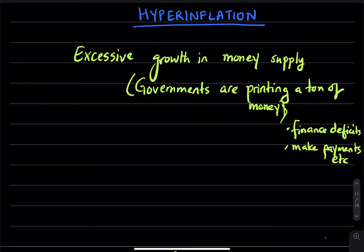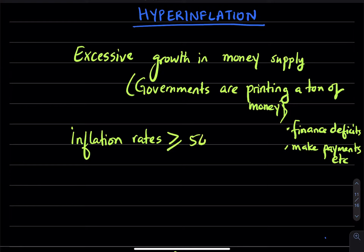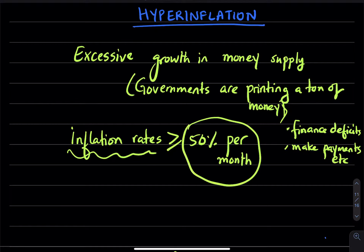So, what qualifies as hyperinflationary? When inflation rates are in excess of 50% per month — imagine that. Imagine your rent going up 50% each month and what a toll it would take on your budget, on your pocket. Inflation rates of more than 50% per month is when we say there is hyperinflation in an economy.